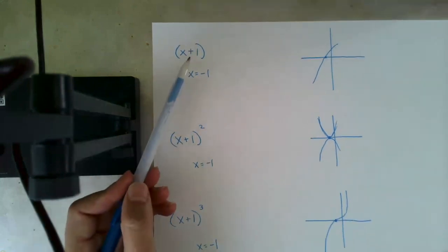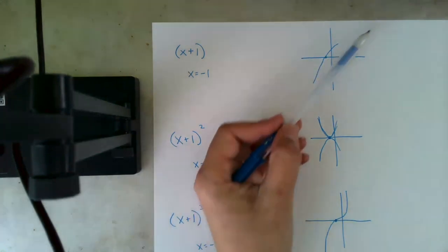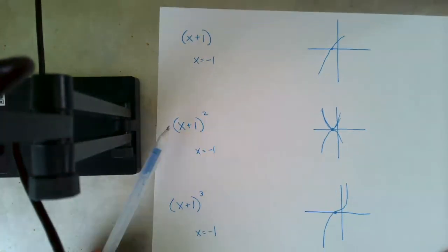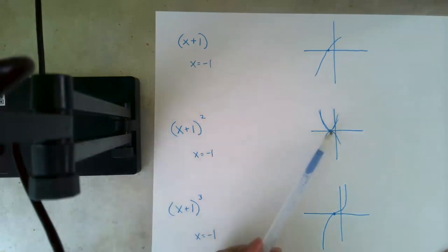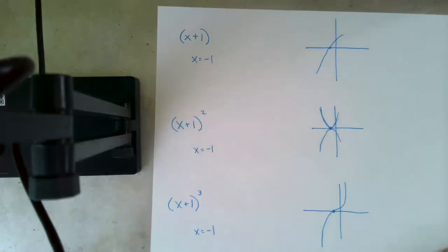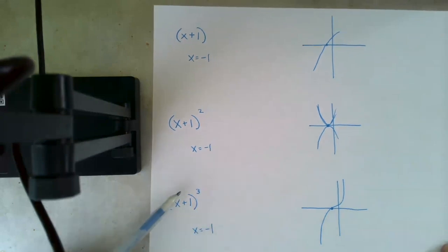So multiplicity of one, we're passing through in the same trajectory. Multiplicity of two or any even, we are bouncing. We are not passing through the axis. And multiplicity of three or any odd multiplicity greater than one, we are passing through, but we are changing our direction.